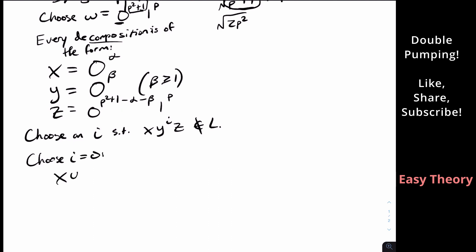So X, Y to the zero Z, which means we're picking zero copies of Y. So that means it's just the string XZ and nothing else. And if we just copy from our decomposition, that's zero to the alpha, zero to the P squared plus one minus alpha minus beta, one to the P.